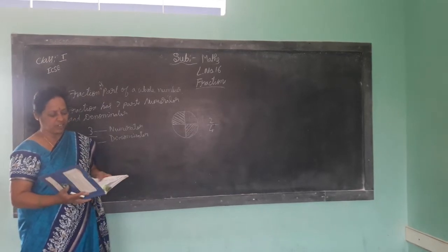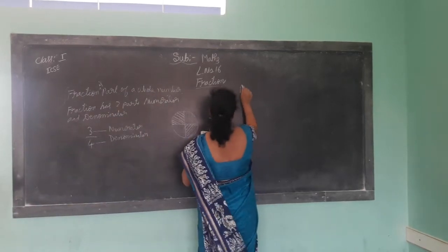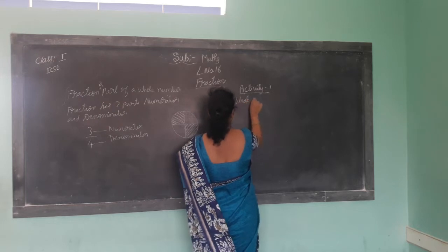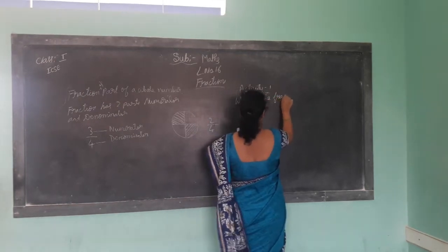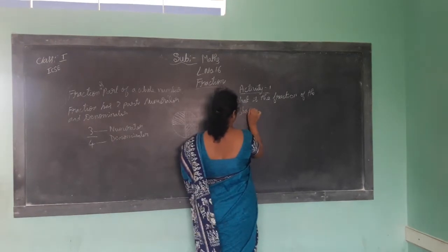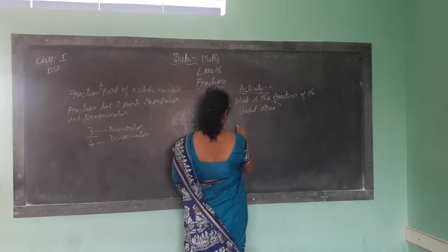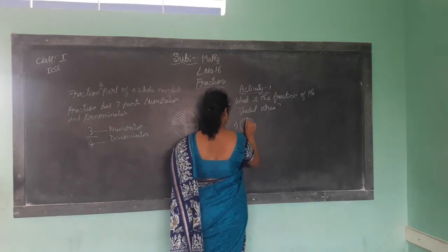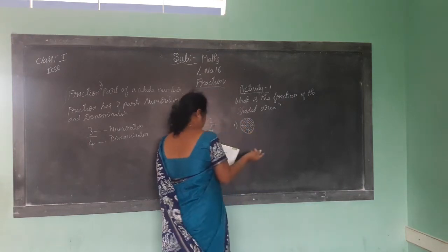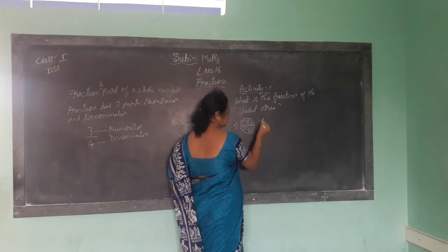Now coming to page number 120 in your textbook. What is the fraction of the shaded area? Activity 1 — what is the fraction of the shaded area? So first one — shaded is how much you have to write. Count: 1, 2, 3, 4. So shaded is 1 and total is 4.